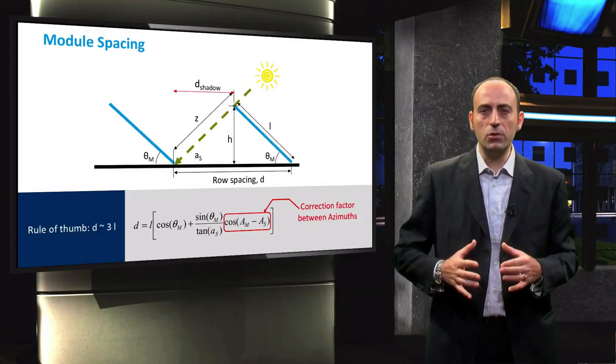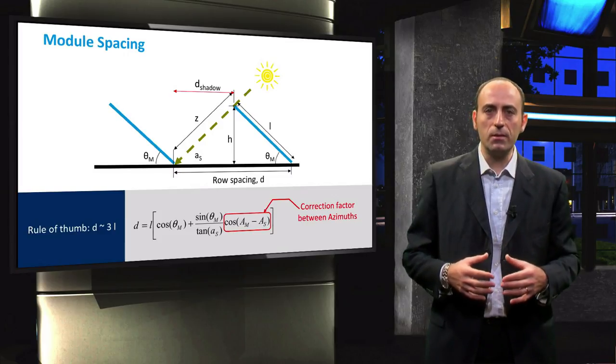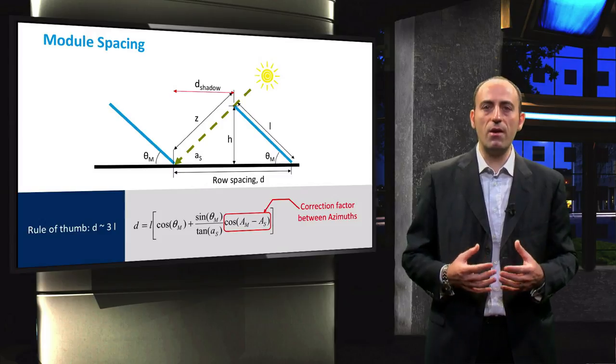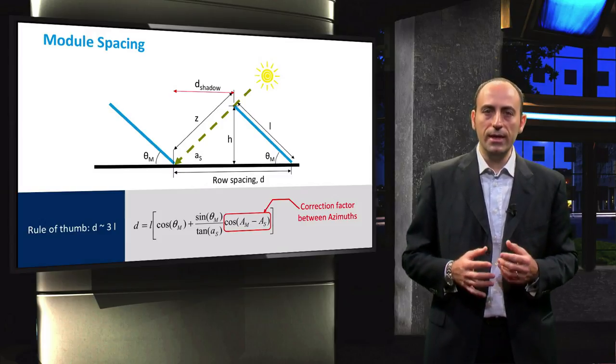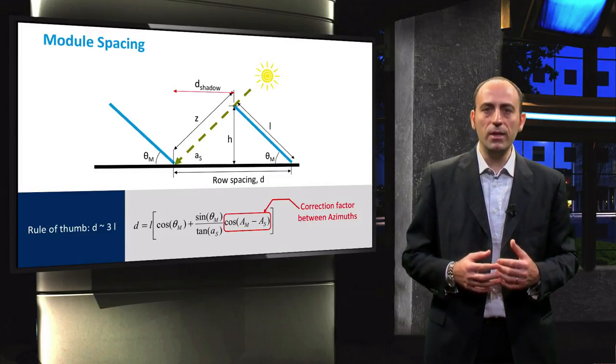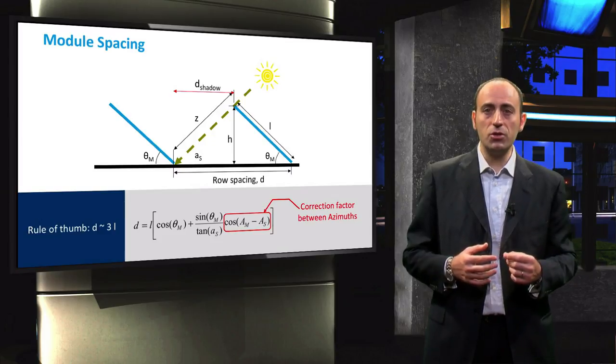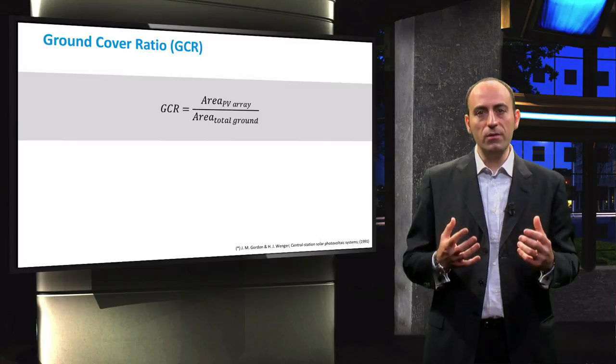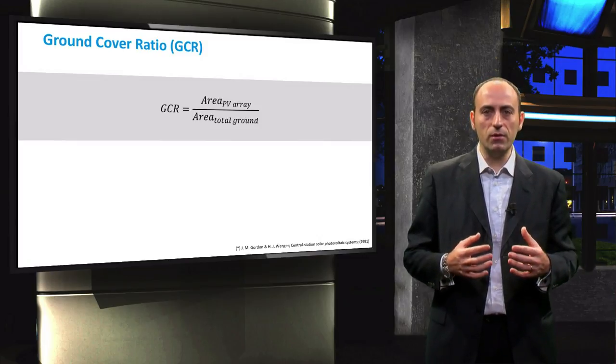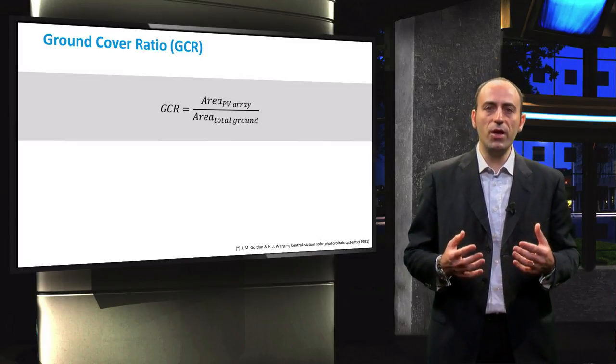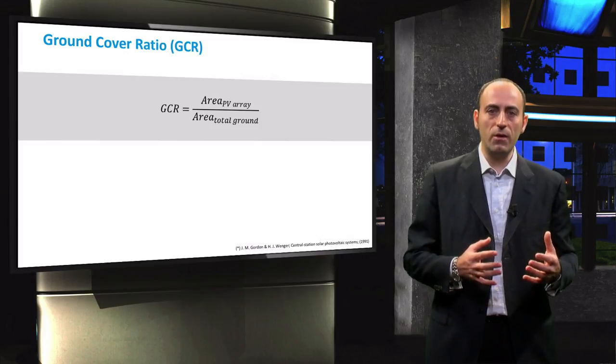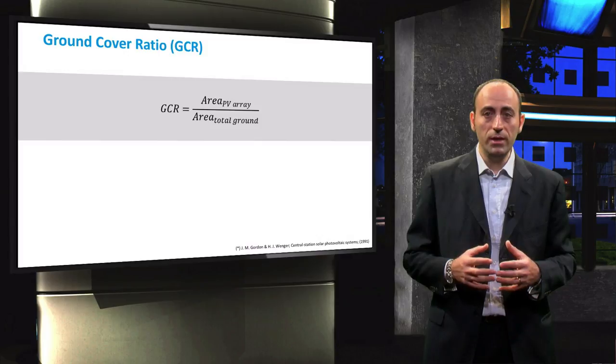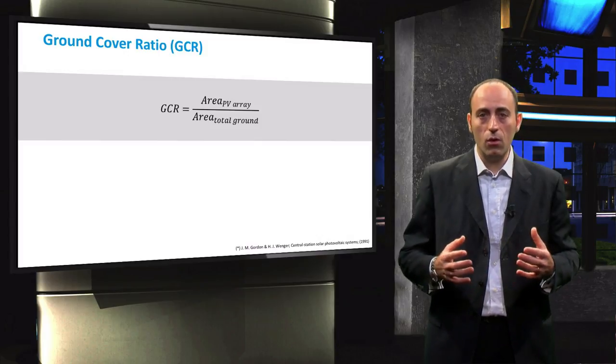It is important to note that module spacing plays an important role also in determining the surface area required for the installation. Indeed, in the last slide we introduced a parameter to measure the land occupation. Such a parameter is called the ground-cover ratio, and it is defined as the ratio between the area of the PV array divided by the total ground area, which could be the area of the roof or of a field.